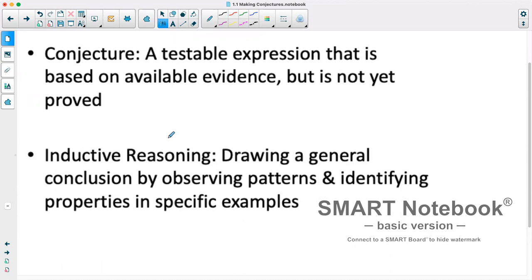Our definition is inductive reasoning. So this is the reasoning that we're using to come up with our conjecture. We're looking at patterns, identifying properties in those patterns, and utilizing that to come up with a prediction about what's going to happen later on in that pattern or in the future.